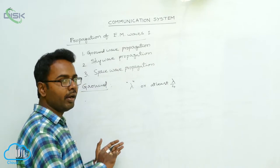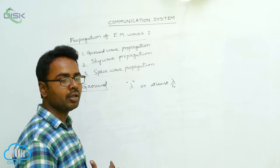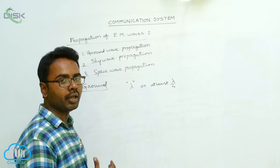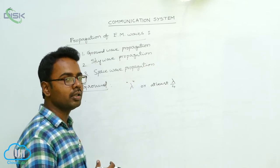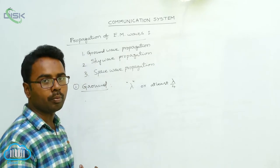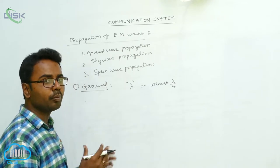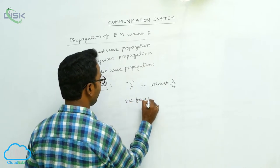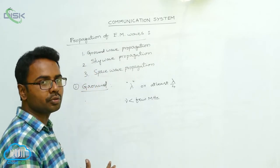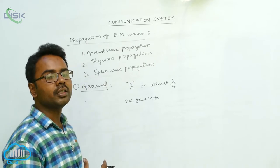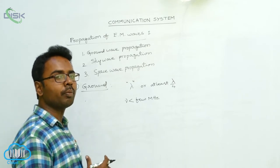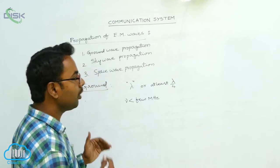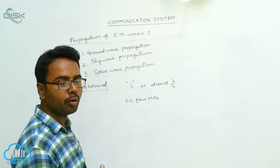To transmit signals of high wavelengths, the antennas must be very tall and are placed close to the ground. When propagating through the atmosphere, these signals are attenuated because they induce currents in the ground and lose their strength. This is why the ground has a strong influence on such waves, and this propagation is called ground wave or surface wave propagation. It is useful for frequencies from a few kilohertz up to a few megahertz. Long-distance communication cannot be achieved using ground wave propagation; sky wave or space wave propagation is used instead.